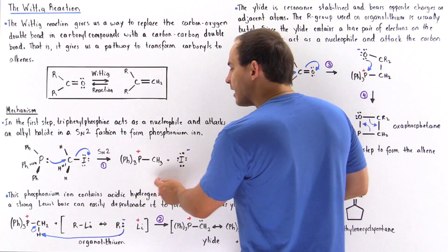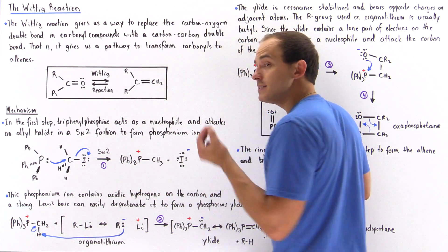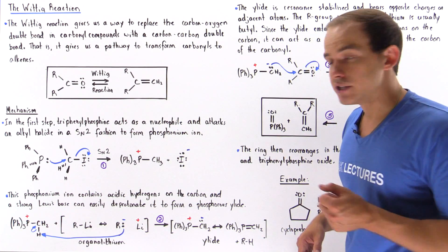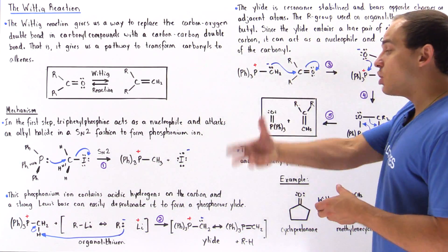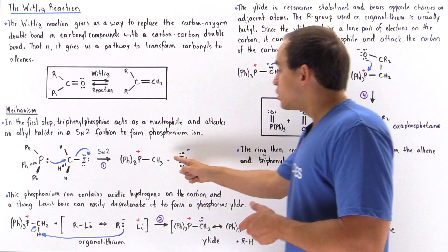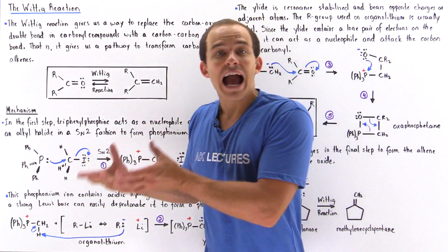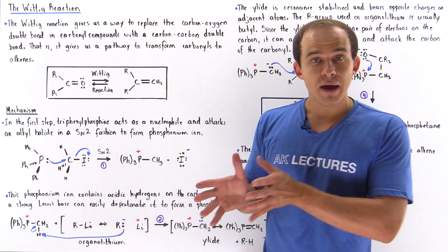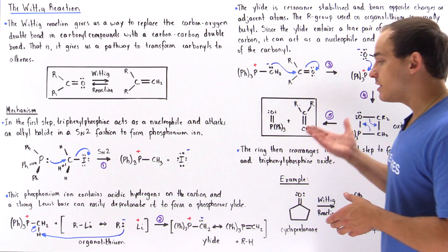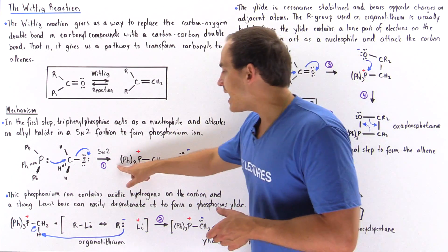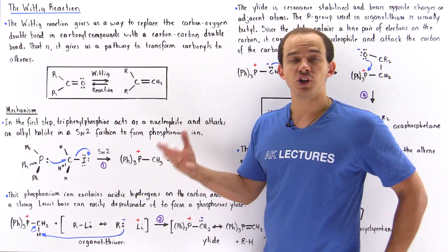The phosphonium ion contains acidic hydrogens — the carbon bears H atoms that can be removed by a Lewis base, so it acts as a Lewis acid. If we react it with a strong Lewis base, we produce the phosphorus elide. So let's take this phosphonium ion and react it with a strong Lewis base.